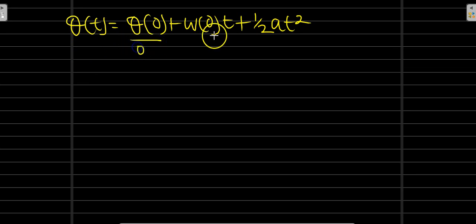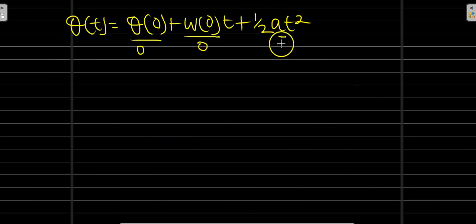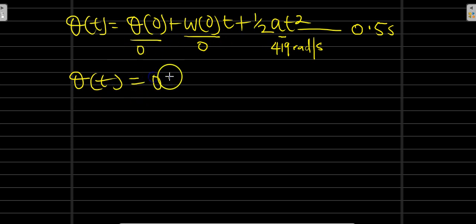Theta of 0 equals 0, omega of 0 equals 0. From what we obtained, a equals 419 radians per second squared. Therefore we have a equals 419 radians per second squared and t equals 0.50 seconds. Once you insert these values into the formula, we're going to have 0 plus 0 plus one-half times 419 times 0.5 squared.